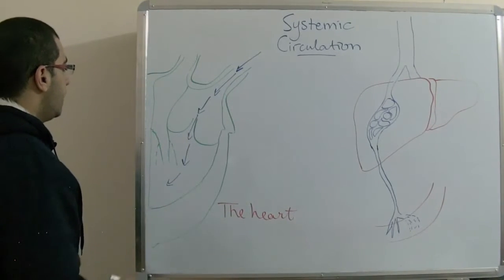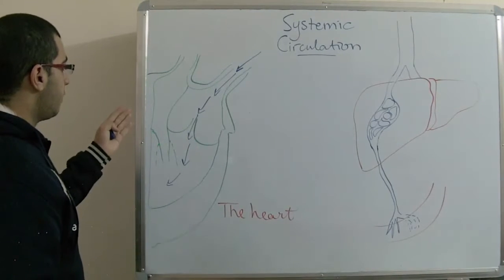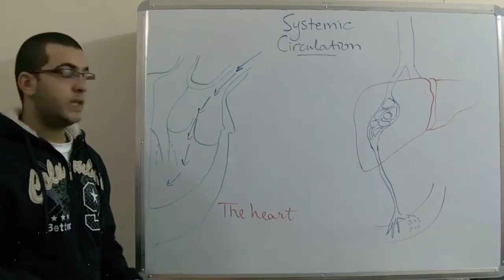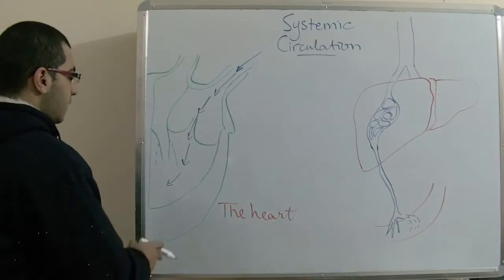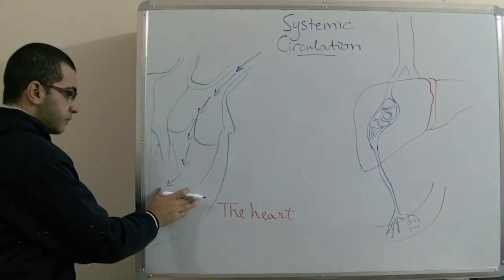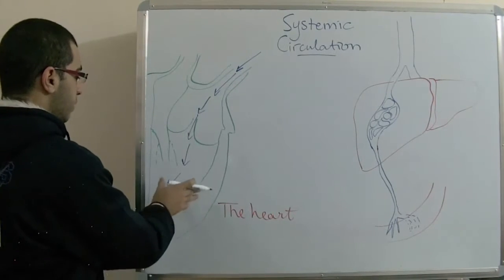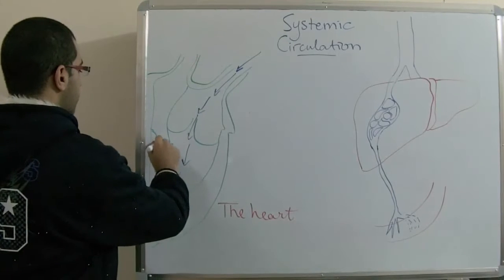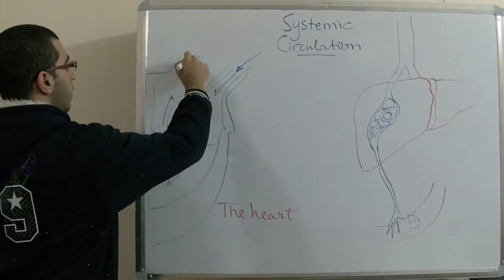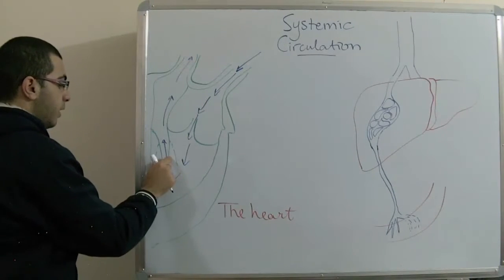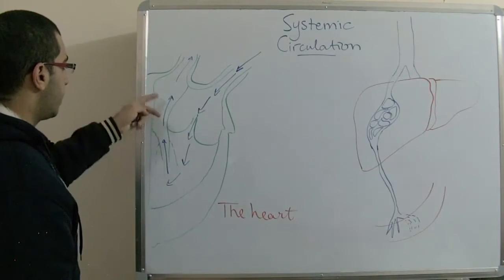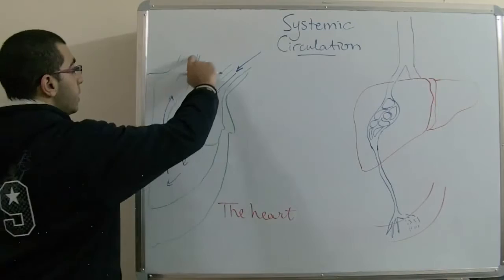Then the nerve impulses, which propagate through the septum and which originate from the sinoatrial node, stimulate the walls of the left ventricle to contract. So the blood moves through the aorta because this is the only open valve which allows the blood to go through it. So the blood goes through the aorta.